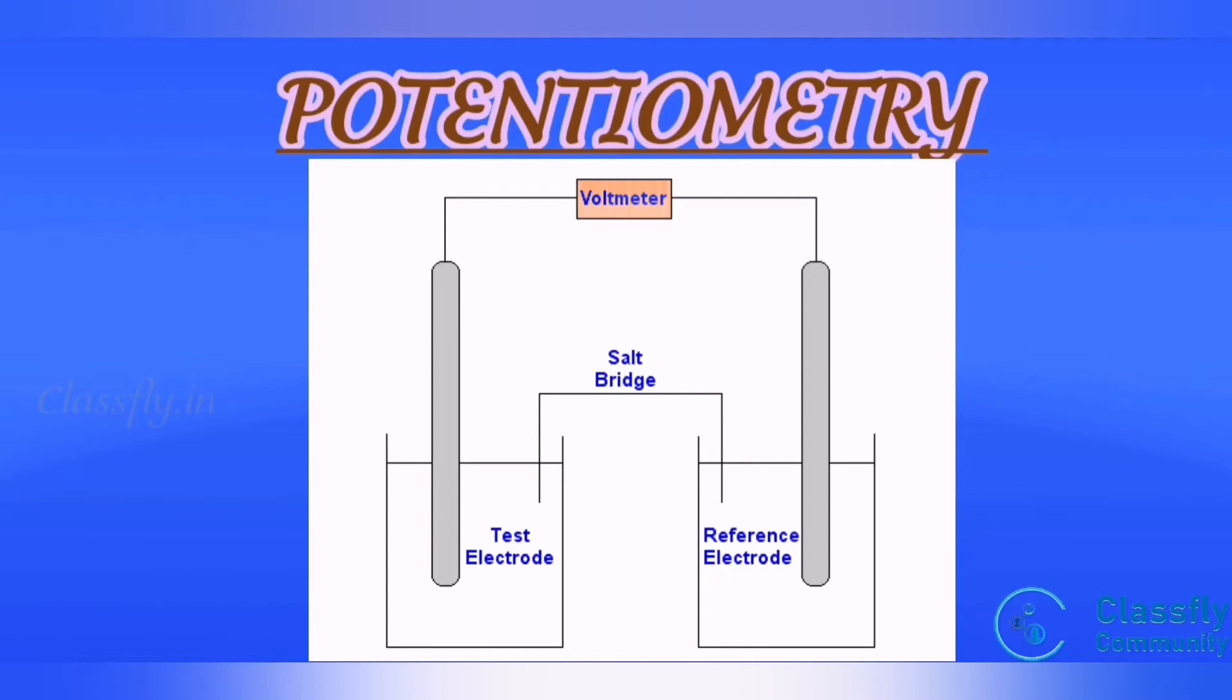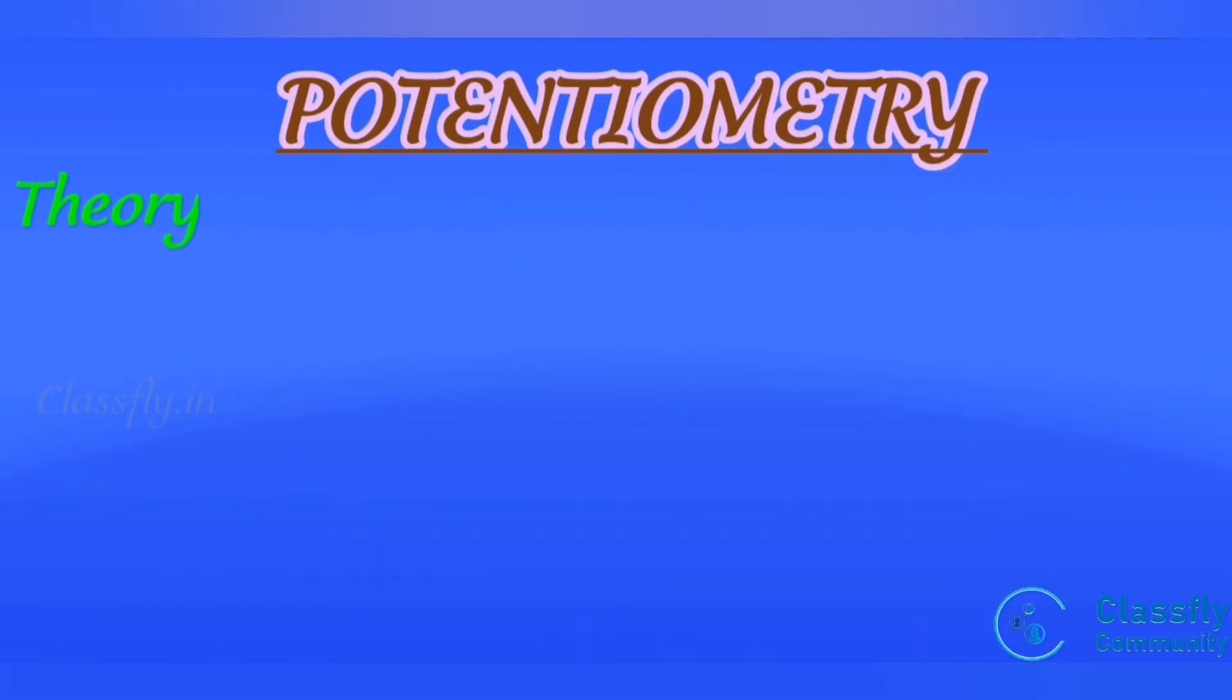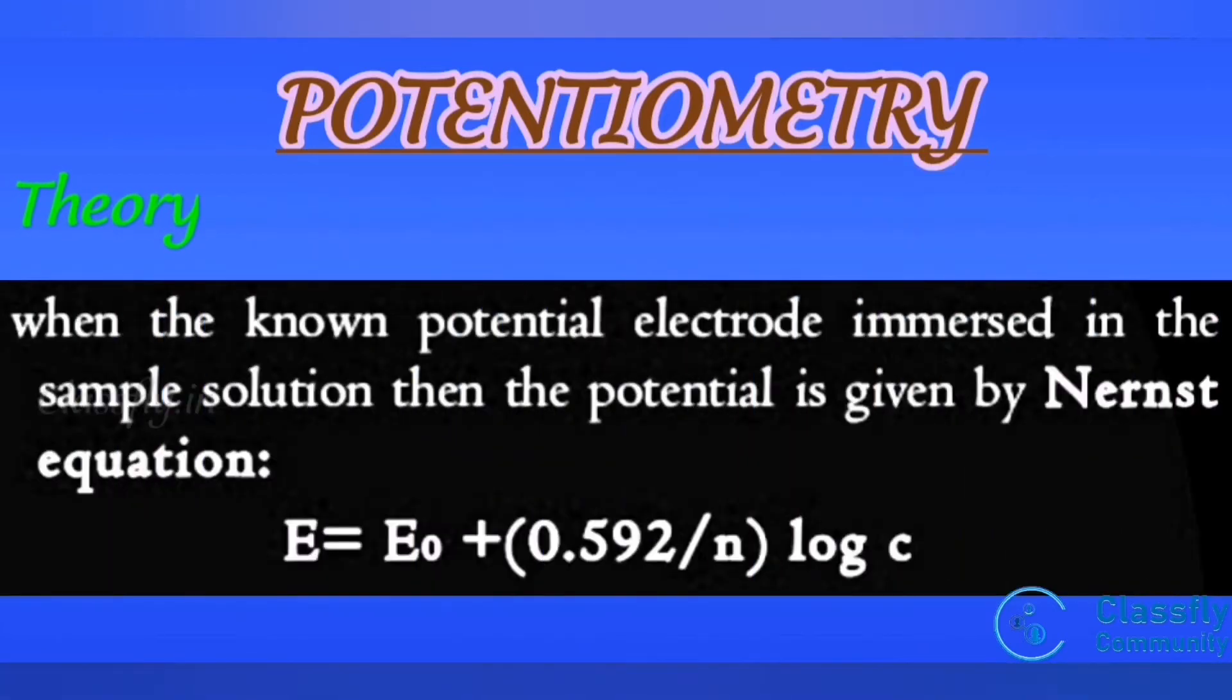In conditions where thermodynamic equilibrium is maintained and the current passing through the electrode does not disturb this equilibrium. Theory: when the non-potential electrode is immersed in a sample solution, then the potential is given by Nernst equation.